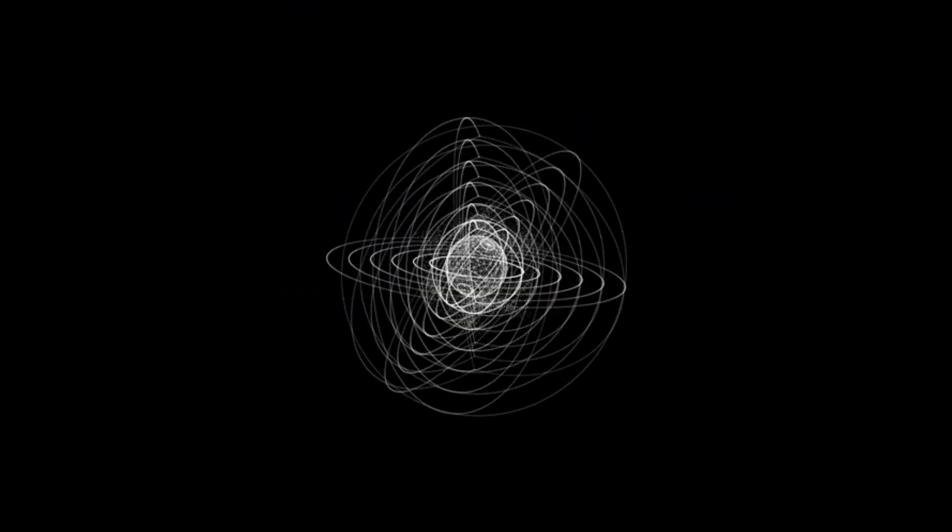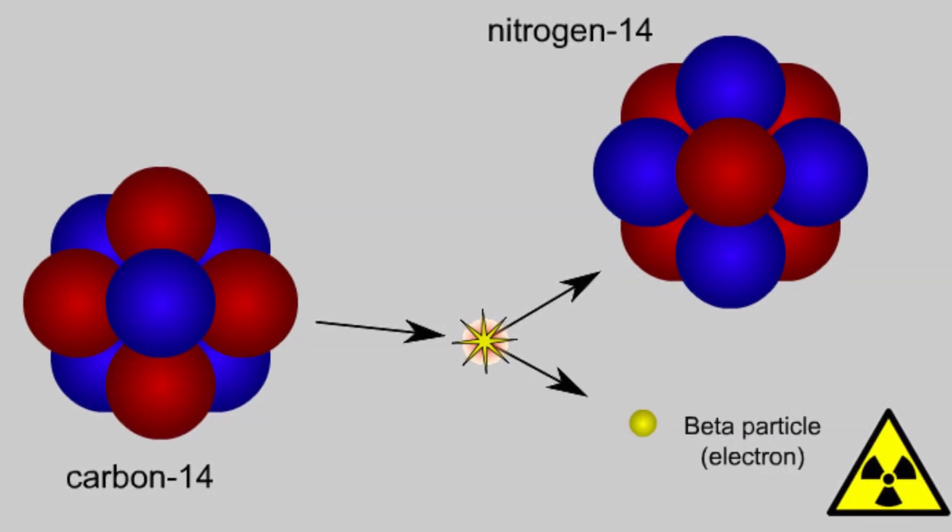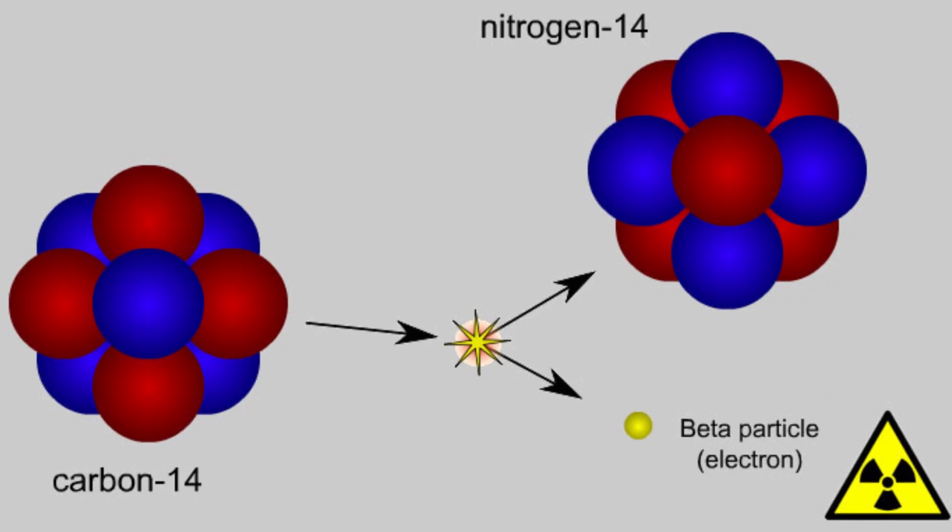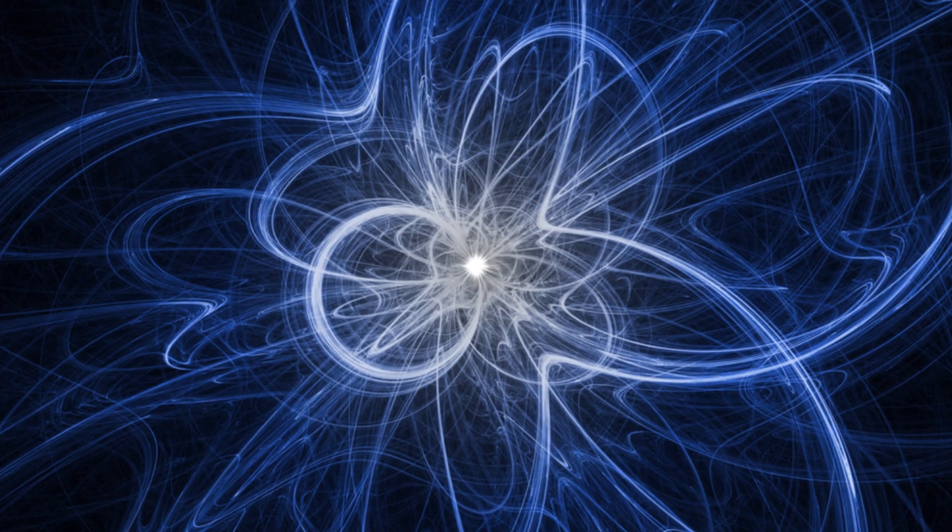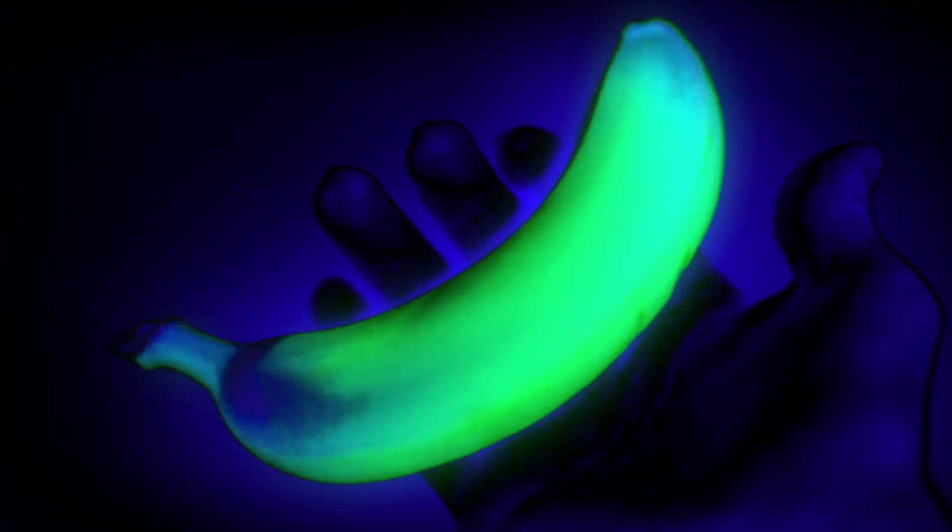It should be noted that atoms are splitting around us all the time through radioactive decay. Unstable atomic nuclei lose energy over time, emitting radiation in the form of alpha particles, beta particles, and neutrinos. Even everyday objects like bananas are technically radioactive.